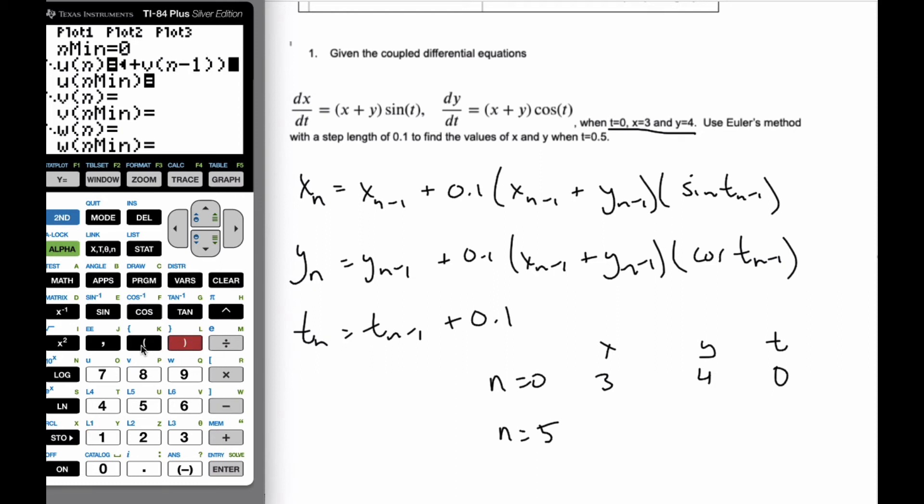And then I'm going to close that one. I'm going to open up a new one for the sine of, now t is going to be w. You'll notice there's u, v, and w. So t is going to be w of n minus 1.